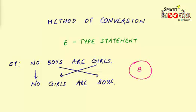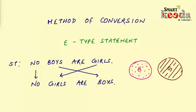Here is the circle of boys represented by dots, and the circle of girls represented by lines. You can clearly see that not a single dot is overlapped by the lines — no boys are girls. Similarly, not a single line is overlapped by dots either. Therefore, the definite conclusion of 'no boys are girls' is 'no girls are boys.'